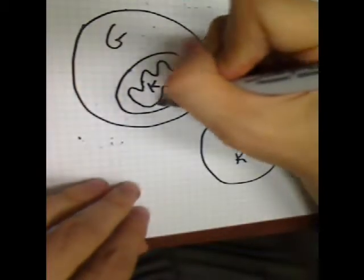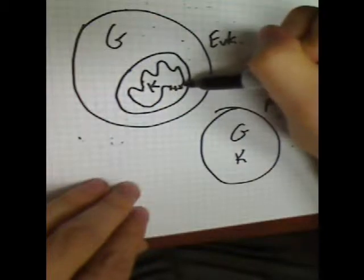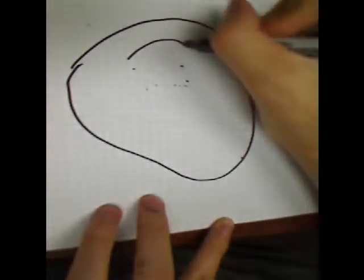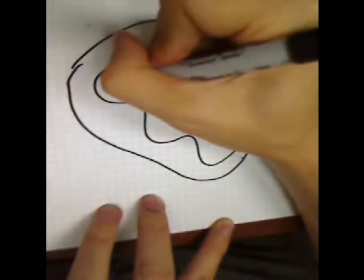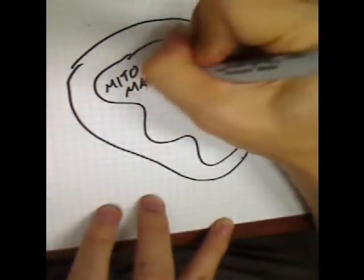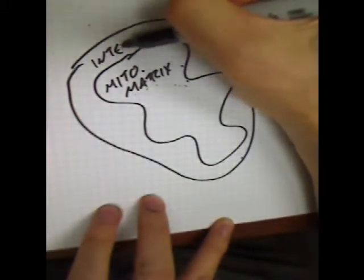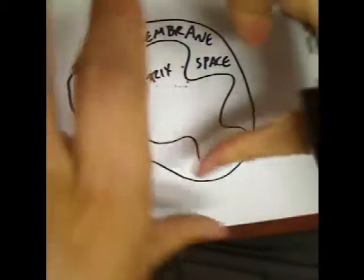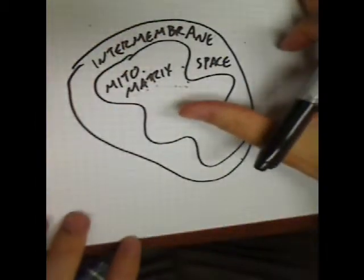The electron transport chain — we're going to talk about it mainly in terms of a mitochondrion — is a series of molecules embedded inside the inner membrane of the mitochondrion. The mitochondrion has two membranes: the outer membrane and the inner membrane. Inside the inner membrane is called the mitochondrial matrix, and the space between the outer and inner membrane is the intermembrane space. Out here is just the cytoplasm of the cell.